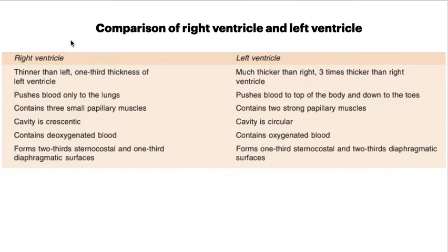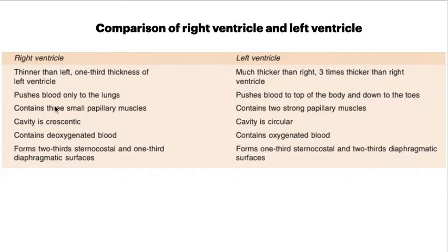Comparing the right and left ventricle: the right ventricle is thinner — approximately one-third the thickness of the left ventricle — whereas the left ventricle is three times thicker than the right. The right ventricle pushes blood only to the lungs, while the left ventricle pushes blood to the entire body. The right ventricle contains three small papillary muscles, whereas the left ventricle has two strong papillary muscles. The cavity is crescent-shaped in the right ventricle and circular in the left. The right ventricle forms two-thirds of the sternocostal surface and one-third of the diaphragmatic surface, whereas the left ventricle forms one-third of the sternocostal surface and two-thirds of the diaphragmatic surface.